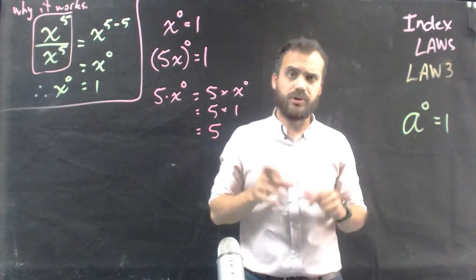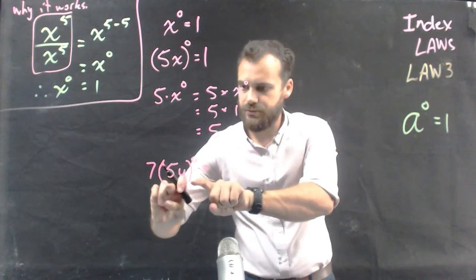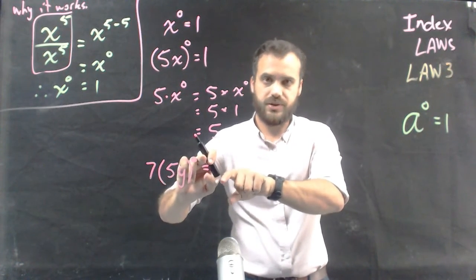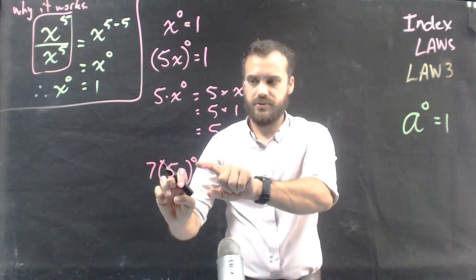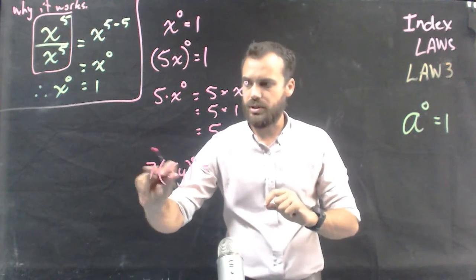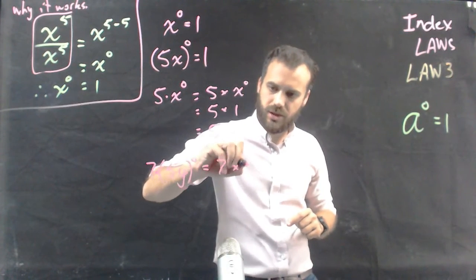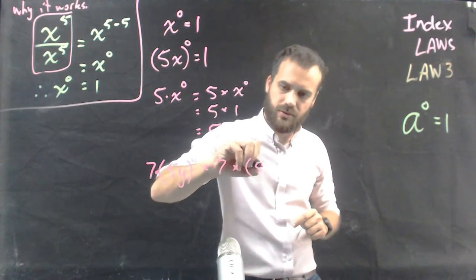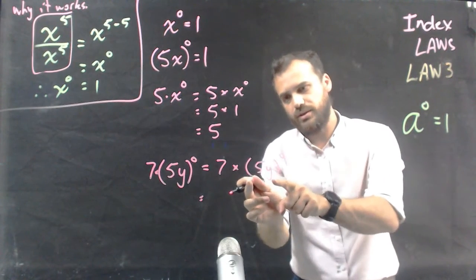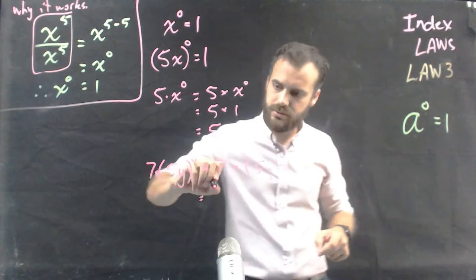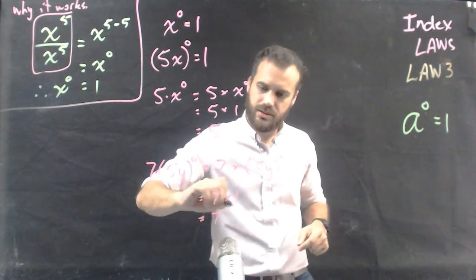Here's one more really crazy example: 7 times 5 to the y, all to the power of 0. This says that the things in brackets are being raised to the power of 0, and then there's a multiply by 7. So it's 7 times 5y to the power of 0. We know that anything raised to the power of 0 is 1. So in this case, the answer is 7.